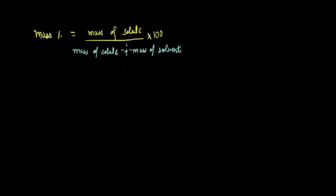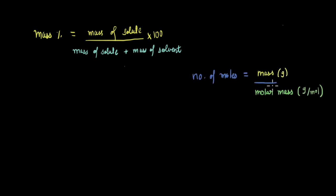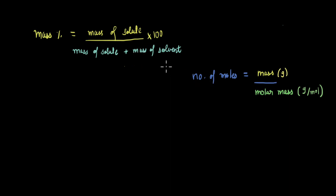We have just broken the mass of solution down into those two parts. We know that the number of moles equals mass in grams divided by molar mass in grams per mole. Rearranging, mass equals number of moles times molar mass. Using this relation, we can rewrite the mass of the solute as NB times MB, and similarly calculate the mass of the solvent. Plugging in these values, we can rewrite the mass percent accordingly.